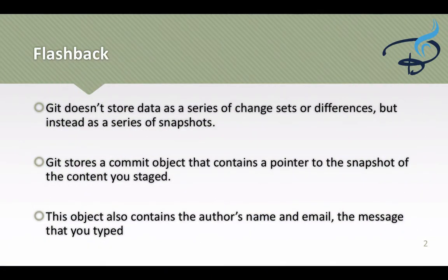Let's talk about some flashback — how Git works. Git doesn't store data as a series of changes or differences. Instead, it is stored as a series of snapshots. A snapshot is just how your project looks at the time of commit — it creates information about every file, not just the files that have changed, but the entire project. That is very important and this is the power of Git: it stores the snapshot of your project.